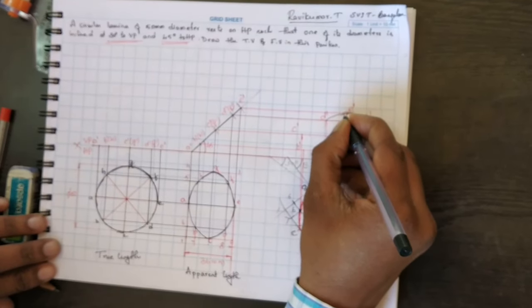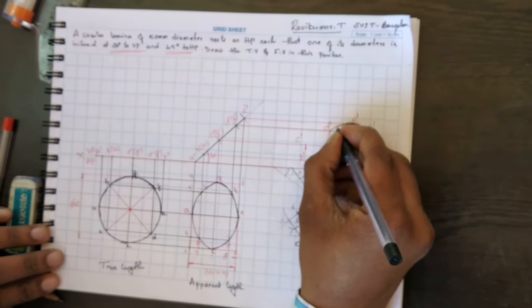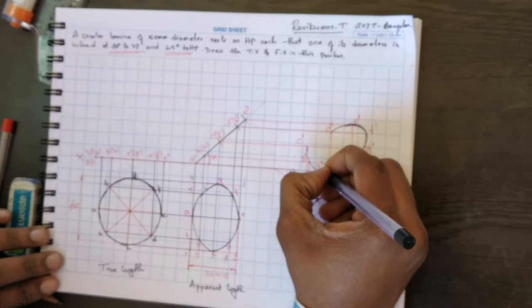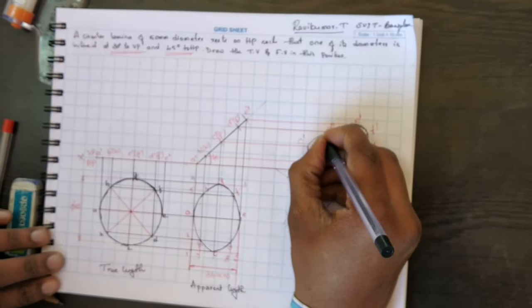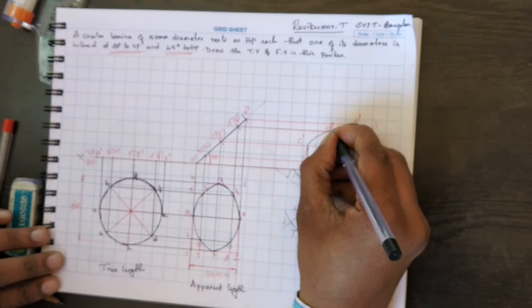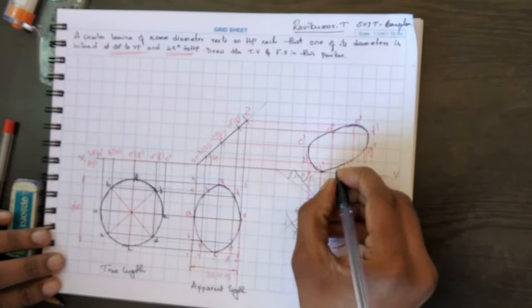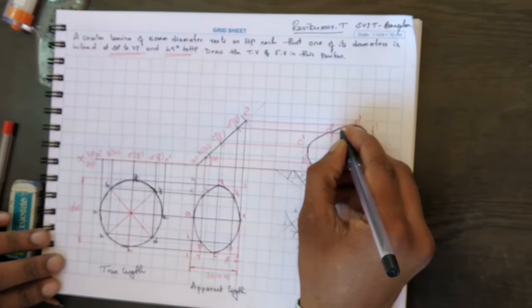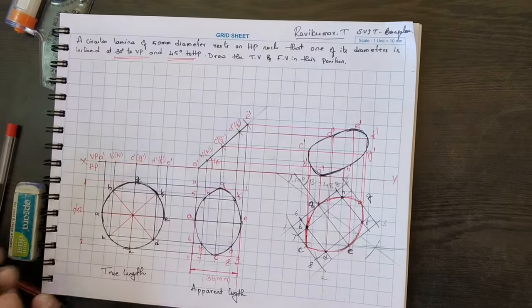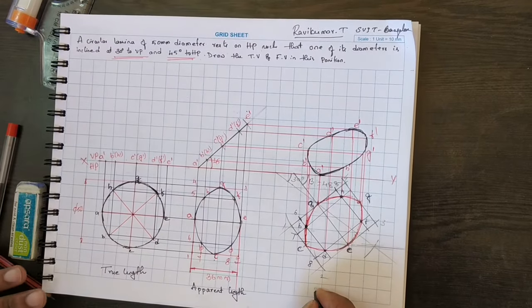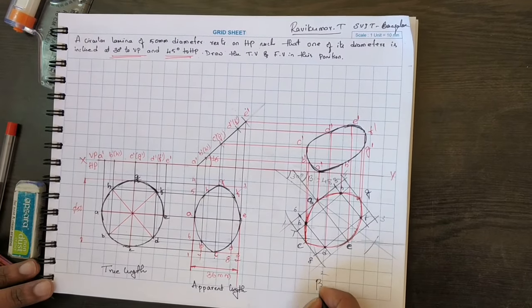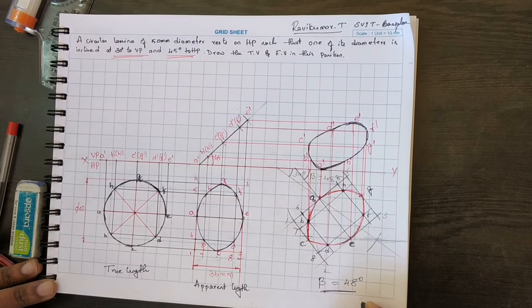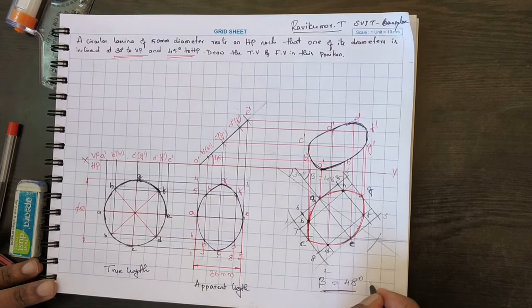With a freehand sketch, join all the points to complete the profile. Beta is 48 degrees. This completes the problem. Thank you.